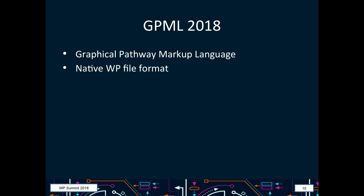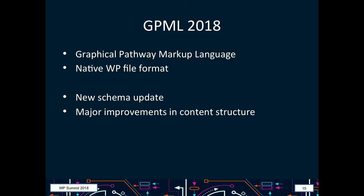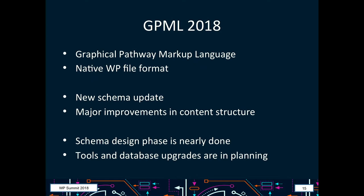The next thing we're working hard on is the next GPML format. The last GPML format was released in 2013 and we really want to update it. GPML is the Graphical Pathway Markup Language — it's the native WikiPathways file format. This new schema update has major improvements in content structure. But that also means upgrading all our tools and the database requires very precise testing and planning. The schema design phase is nearly done, and we are now planning how to update all the tools and the database and inform all downstream users of GPML well in advance, because there are going to be major changes.